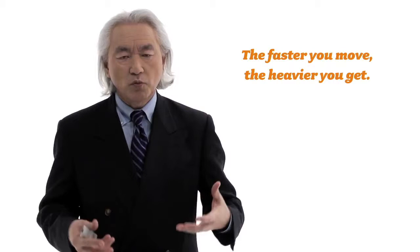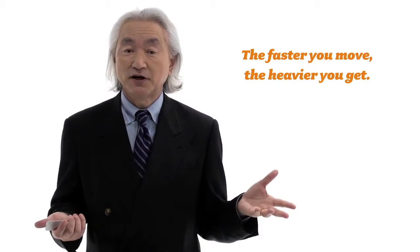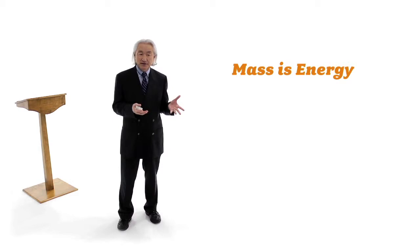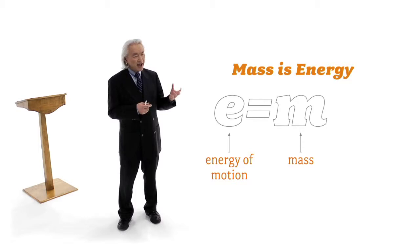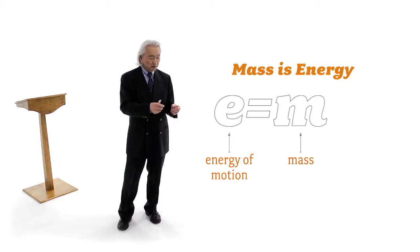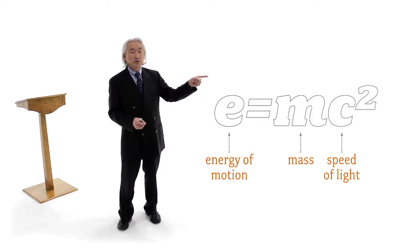What Einstein showed was that the faster you move, the heavier you get. So your weight is not a constant. When you move very rapidly, you get heavier, something which we measure every day in the laboratory. Now this means that the energy of motion transformed into mass, because you get heavier. Now listen carefully. The faster you move, the heavier you get, which means the energy of motion, E, turns into m, your mass. And the relationship between E and m is very simple. It takes one second to write it down on a sheet of paper. It is exactly E equals mc squared.